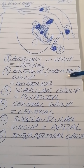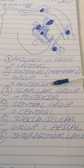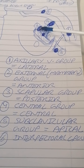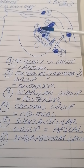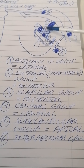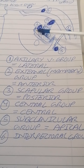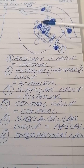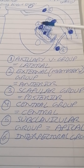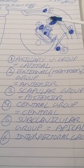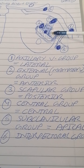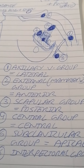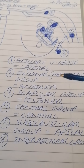The second group is the external mammary group, also called the anterior group. It has around four to seven lymph nodes. Its position is anterior — that's why it's called the anterior group — and it is located posterior to the pectoralis minor muscle. This group receives lymph drainage from the lateral aspect of the breast.